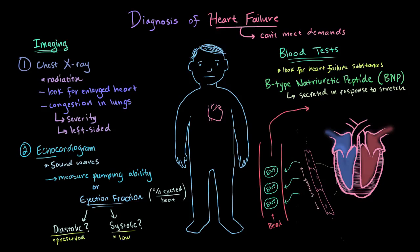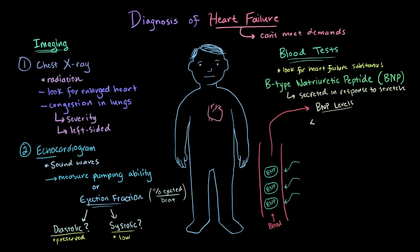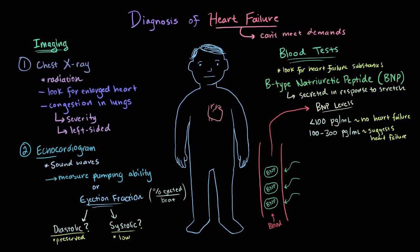So if we take a small sample of blood, we can analyze it and see how much BNP is present. BNP levels below 100 picograms per milliliter of blood indicates no heart failure — a really small amount, but still measurable. Levels between 100 and 300 picograms per milliliter might suggest the presence of heart failure. Between 300 and 900 might be considered mild to moderate heart failure. And above 900 picograms per milliliter would indicate a severe case of heart failure.